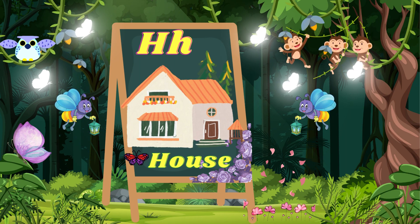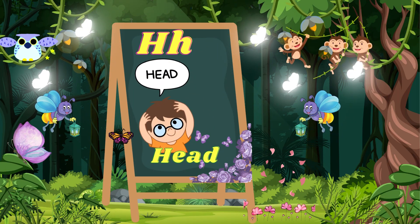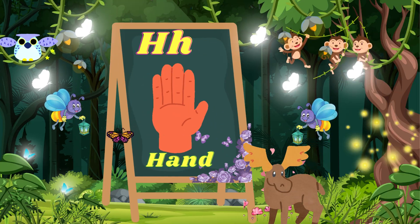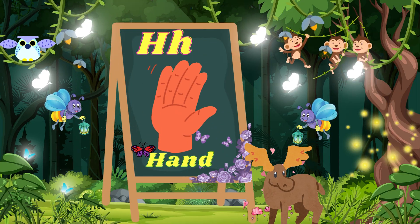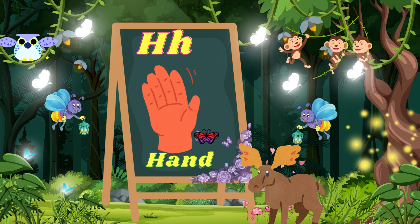The third word which starts from the H alphabet is house. Repeat that: H for house. The fourth word which starts from the H alphabet is head. Repeat that: H for head. The fifth word which starts from the H alphabet is hand. Repeat that: H for hand.